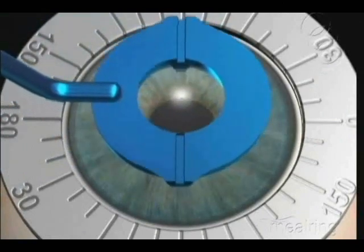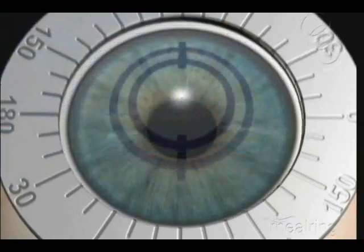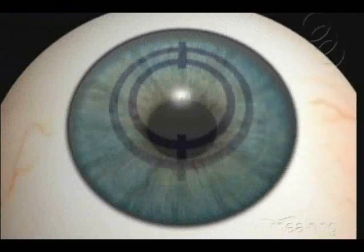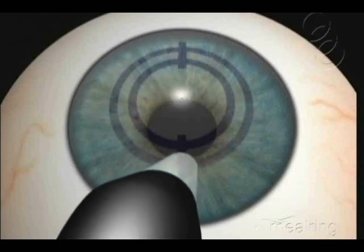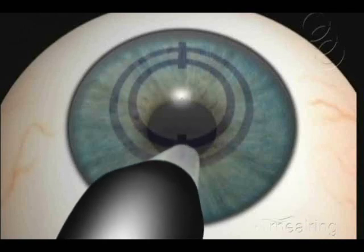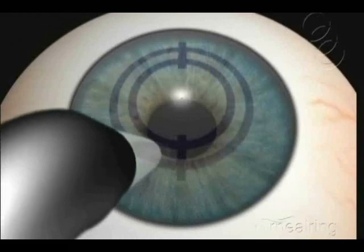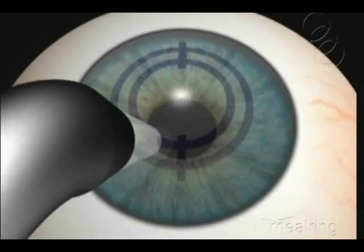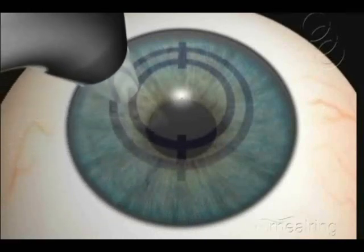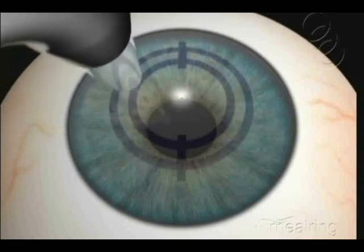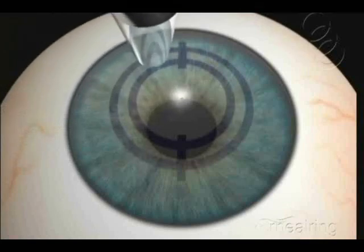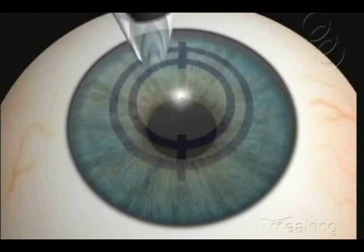Center the double marker at the de-epithelialized spot created in the first step. Use a pachymeter to measure the corneal thickness at the incision site at least three times and consider the mean value. Also, it is important to measure corneal thickness throughout the segment insertion zone to verify if there is any thinness which would contraindicate surgery.